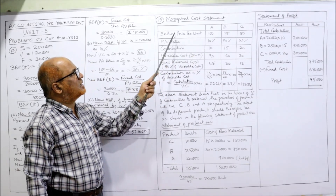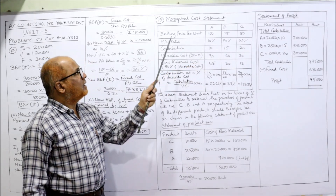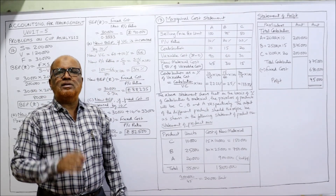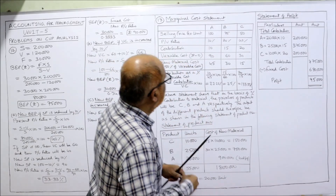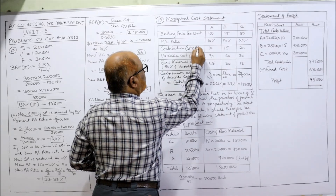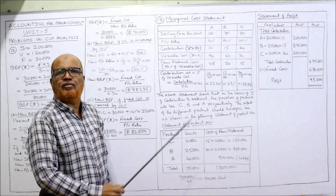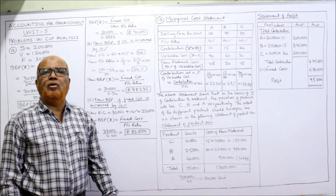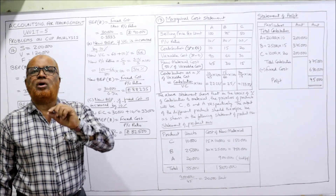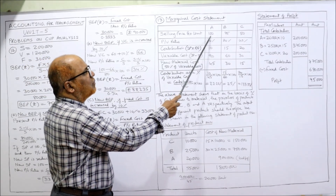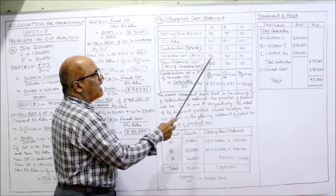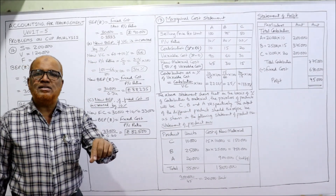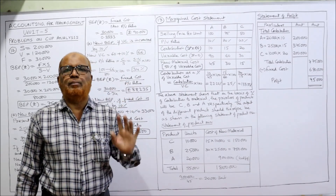Marginal cost statement for A, B, C: Contribution = Selling Price × PV Ratio. So A: 100 × 10% = 10; B: 75 × 20% = 15; C: 50 × 40% = 20. Variable cost = Selling Price − Contribution: A = 100 − 10 = 90; B = 75 − 15 = 60; C = 50 − 20 = 30. Raw material is 50% of variable cost: A = 45, B = 30, C = 15.